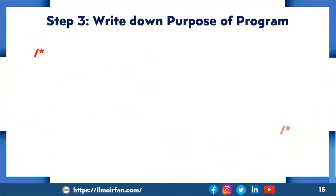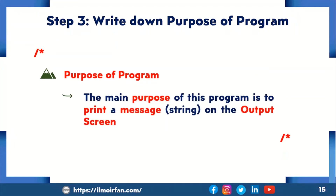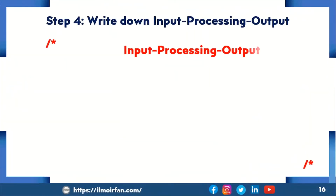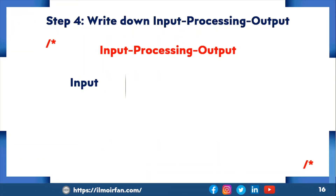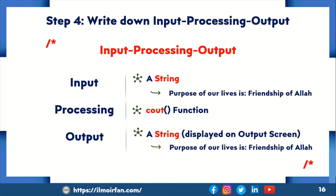Step 3 is write down the purpose of the program. The purpose of the program is written in multi-line comments. The main purpose of this program is to print a message on the output screen. Step 4 is write down input, processing, output. The input of the program is a string: 'Purpose of our lives is friendship of Allah.' For processing, I have used the cout function to display the input string on the output screen. And the output is also that string, displayed on the output screen.